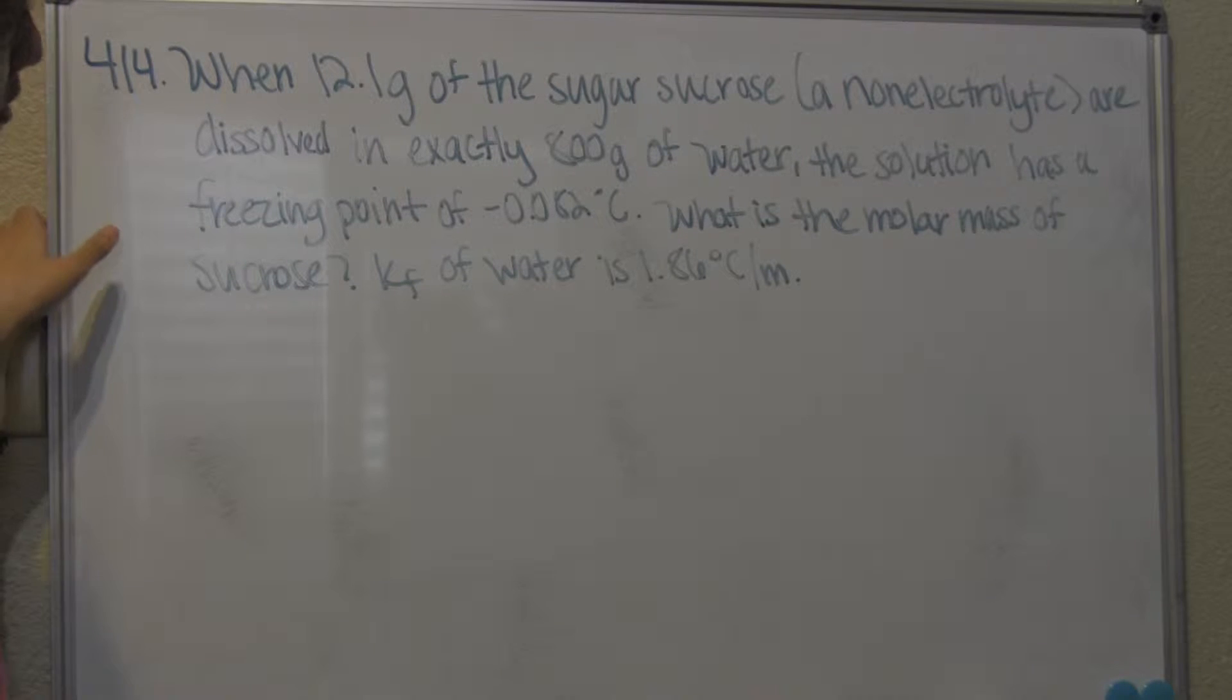when 12.1 grams of the sugar sucrose, a non-electrolyte, are dissolved in exactly 800 grams of water, the solution has a freezing point of negative 0.082 degrees Celsius. What is the molar mass of sucrose? KF of water is 1.86 degrees Celsius divided by molality.